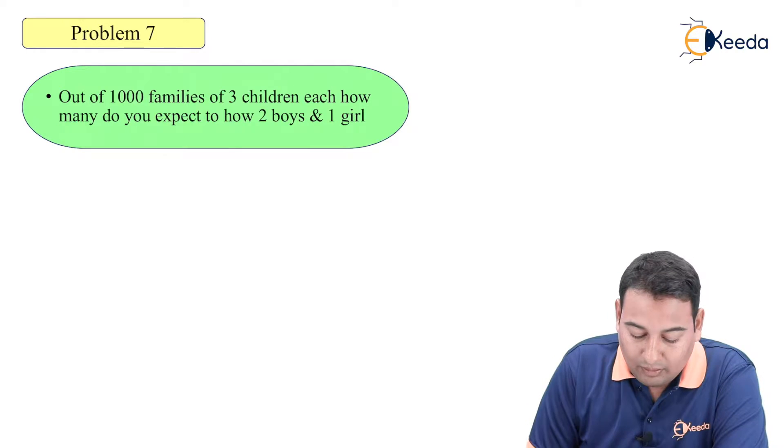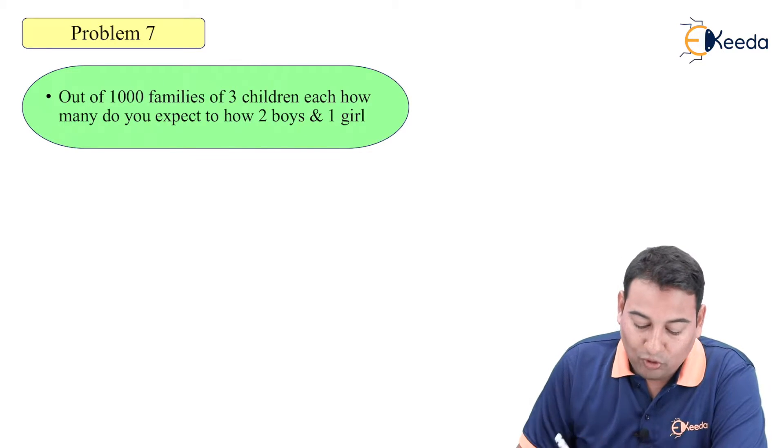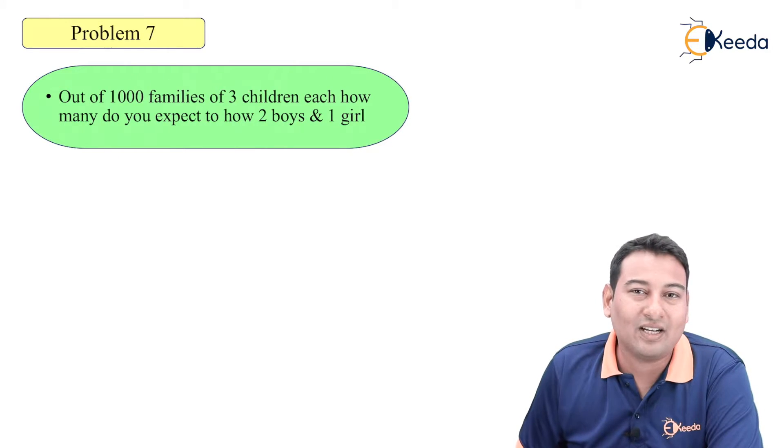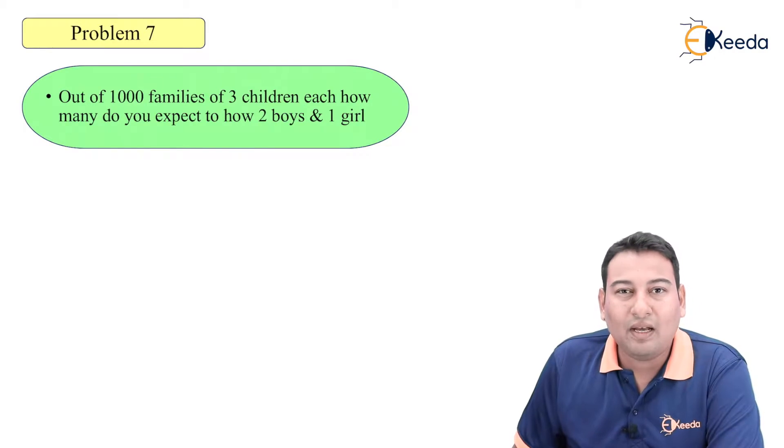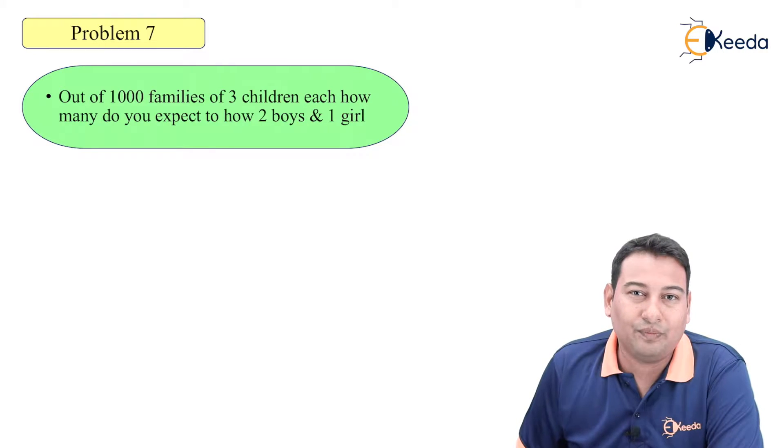First of all, the main aim is to identify whether it is a binomial distribution or not. Two possibilities, boys and girls. First condition is satisfied, P and Q condition. What is the next condition? N should be less and P should be more. Now a family will have a boy or a girl, the probability is 1 by 2. Therefore second condition is also satisfied and the third is N should be less.